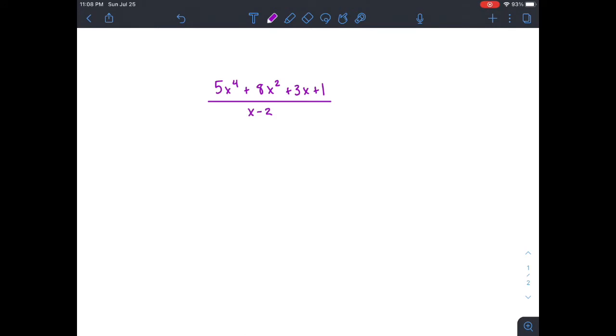So what we have to keep in mind is synthetic division only works when the coefficient of what we're dividing by is 1. So we can only have x minus 2. It wouldn't work for, say, 4x minus 2. We couldn't do it this way.